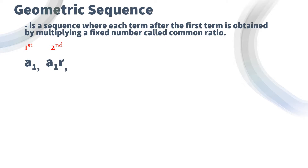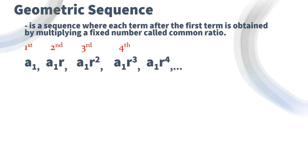To get the next term, we just simply continue multiplying the common ratio. So we will have a sub 1 times r raised to 2 for our third term, then a sub 1 times r raised to 3 for the fourth term, then a sub 1 times r raised to 4 for the fifth term, and so on.